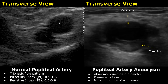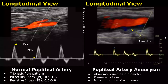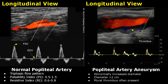The spectral Doppler waveform can be normal in a popliteal artery aneurysm — this waveform is normal and triphasic. But in the image, we can see a mural thrombus and an abnormally increased diameter of the popliteal artery.